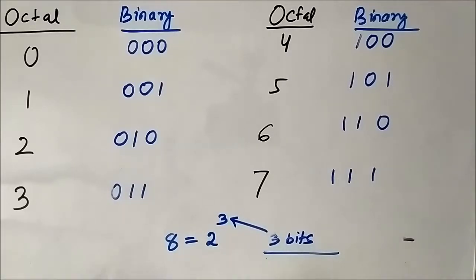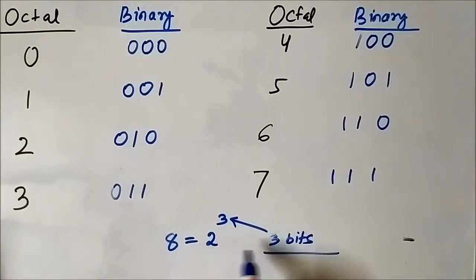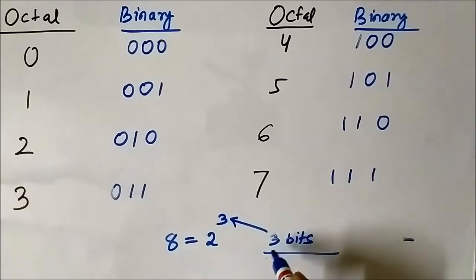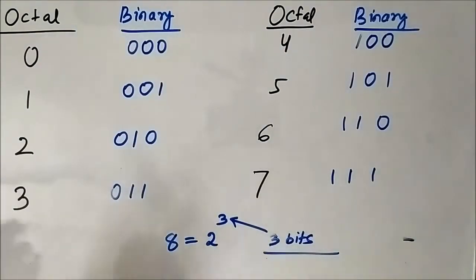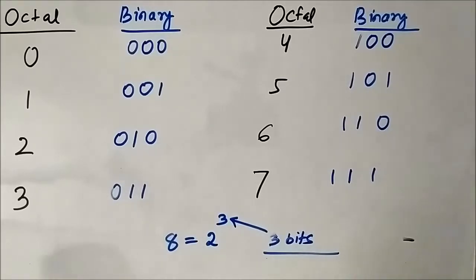Always remember: in octal to binary or binary to octal conversion, each symbol of the octal system should be represented using a three-bit binary grouping, and vice versa for binary to octal conversion. Three-bit binary combinations are used to represent each of the symbols of the octal system — this is important. Now let us see how we can convert a given octal number into binary form.